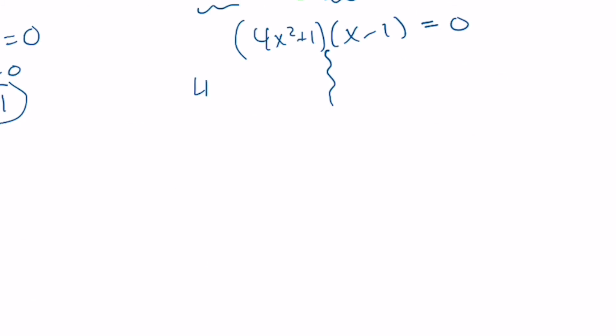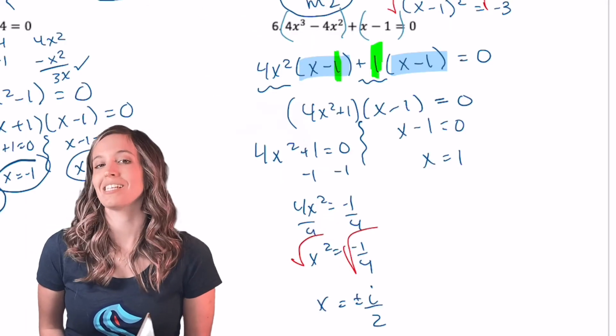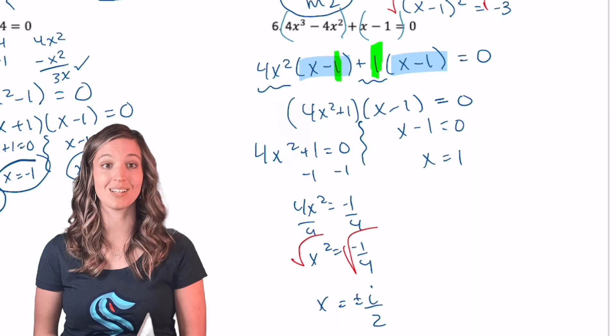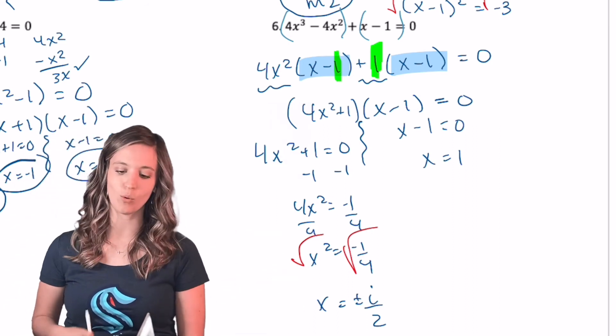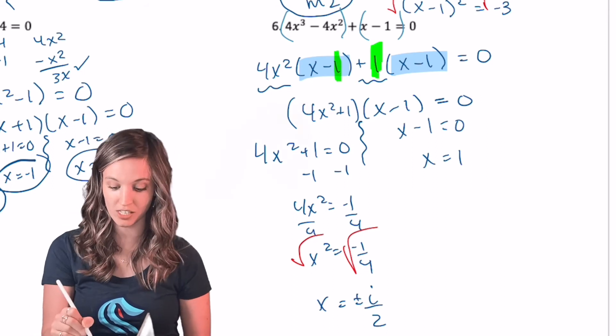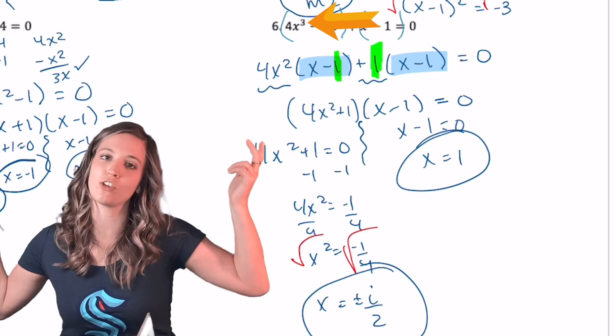So for that first factor, I got X equals plus or minus I divided by two, right? Because the square root of negative one is I and the square root of four is two. Then I got X equals one. Did I get the right number of solutions? Well, here I have two solutions. Then I have one more. Three. It was cubic.